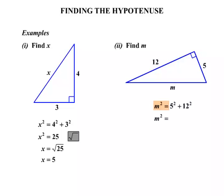So m squared equals, now 5 squared plus 12 squared, well 5 squared is 25, 12 squared is 144. So if we add the two together, we get 169.